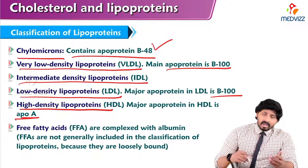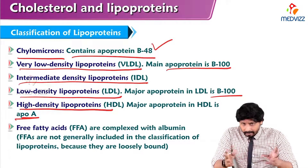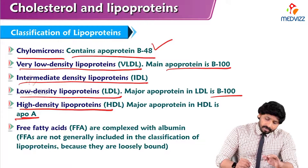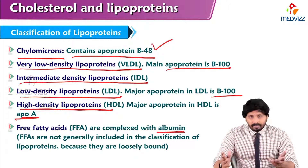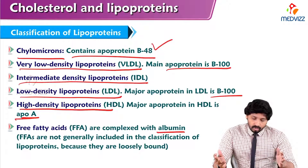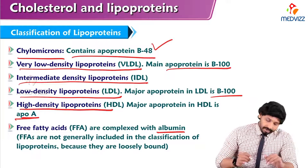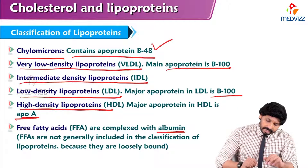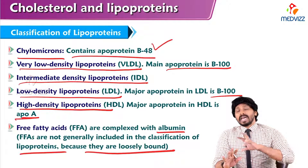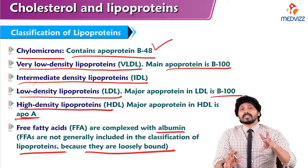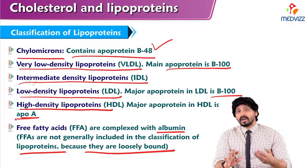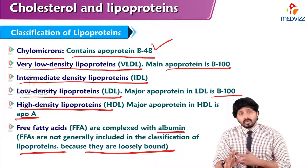Free fatty acids also circulate in the blood. They are in combination with albumin because fatty acids are also lipids — they are insoluble and cannot move freely in circulation. That's why they are not included in the classification of lipoproteins: they are only loosely bound to albumin, whereas the other lipoproteins — such as those containing apoprotein B48 and B100 — are tightly packed as part of the structure.